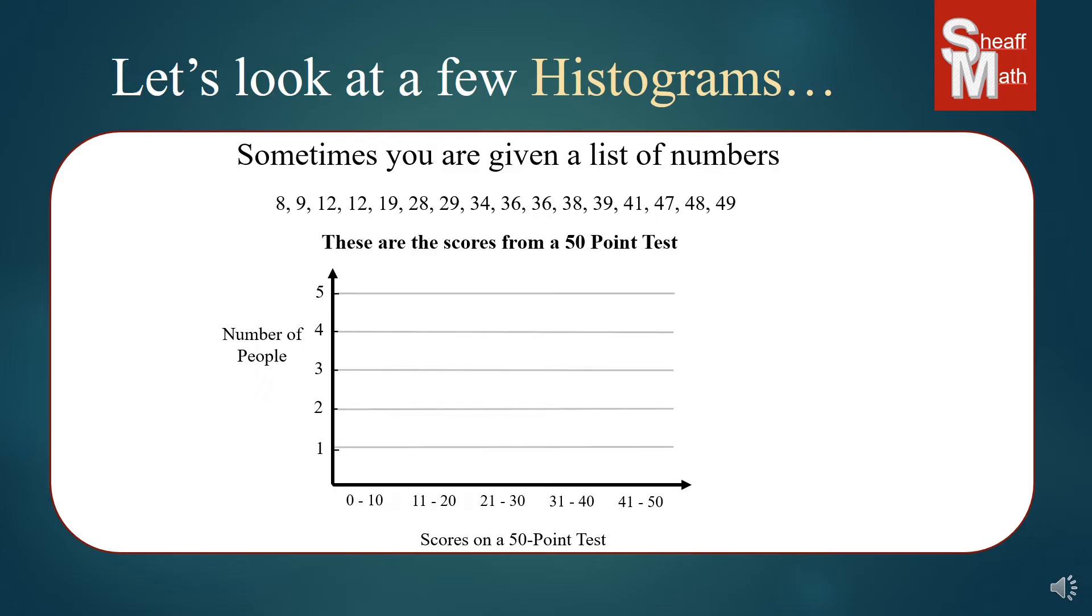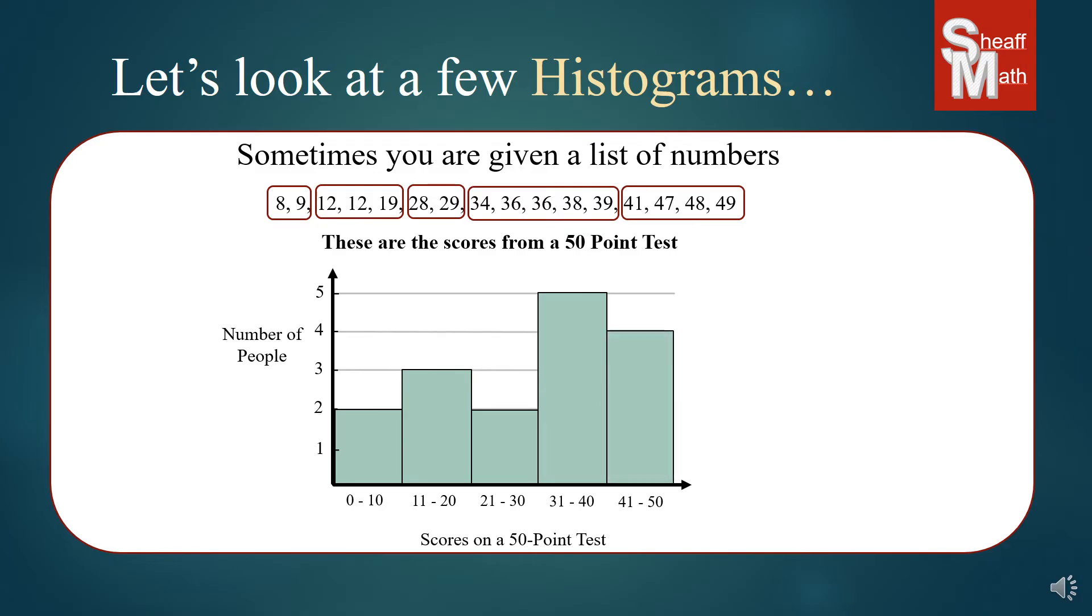So, what you're going to want to do is you could either create a little table on the side, or you could very carefully find how many people there were in each category. So, from zero to ten, we have an eight and a nine, so there's two people that scored from zero to ten. So, we put our bar there. Eleven to twenty, there's three of them, and so we're going to put a bar there. From twenty-one to thirty, there's two, so we put our bar. From thirty-one to forty, we have five of them, so that goes all the way up to the top. And then the forty-one to fifty, we have four of them in that bucket, and so we put it up to the four.